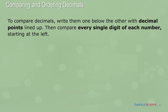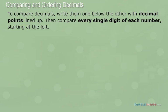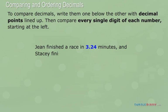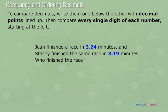For example, Jean finished a race in 3.24 minutes, and Stacey finished the same race in 3.19 minutes. Who finished the race faster?